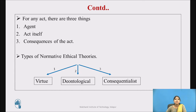The third type is consequentialism. Consequentialism holds that we ought always to act in the way that brings about the best consequences. People feel very strongly about moral judgments that bring the best outcomes in all situations. Here, it does not matter what those acts are — the end justifies the means. All that matters for ethics is making the world a better place. These are the types of normative ethical theories.